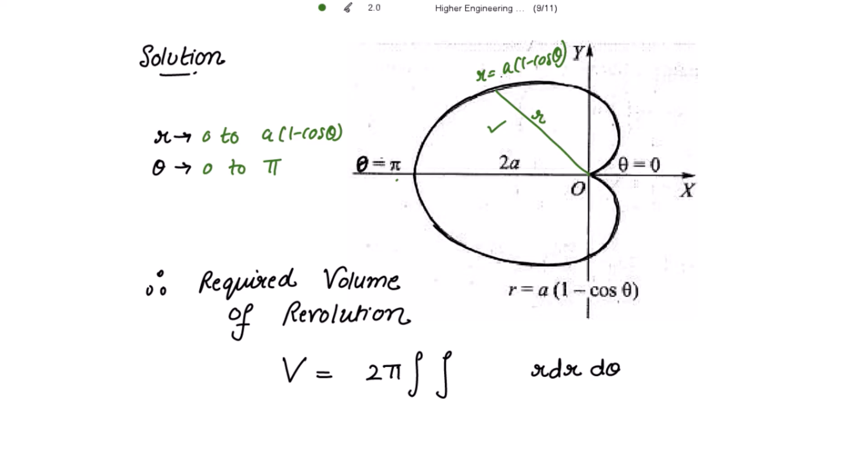So therefore required volume of revolution v is equal to 2 pi double integration. What is the integrant? Because it is rotated about the x-axis, so for x-axis we take the integrant as y and in polar coordinates what is y?